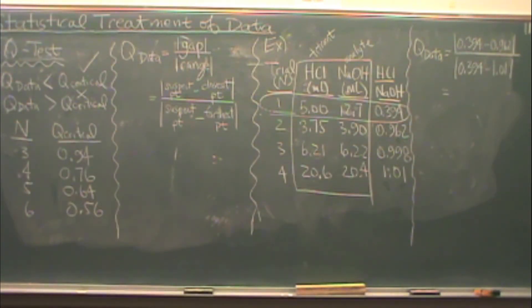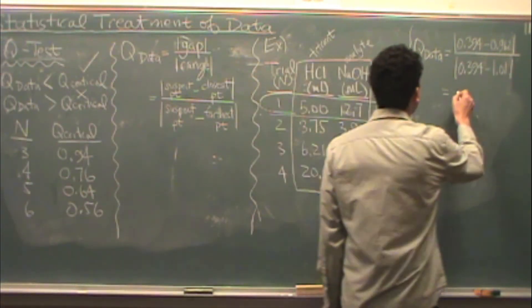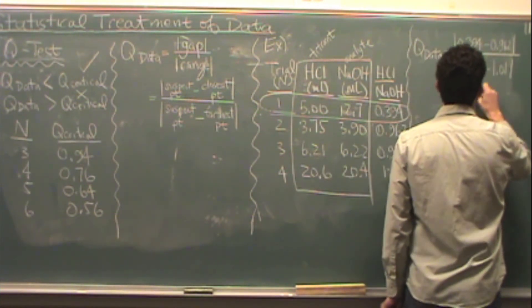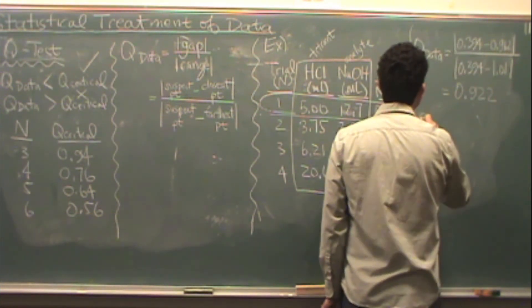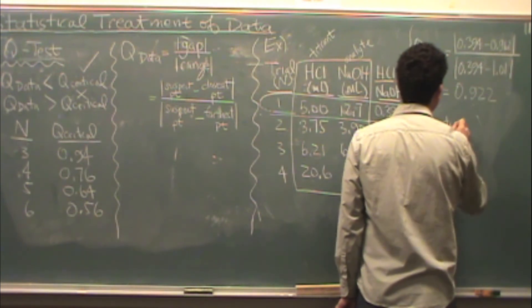You do a little calculation to find that value. I did that for us. I got 0.922. I compare that value to Q critical. Again, where is Q critical?